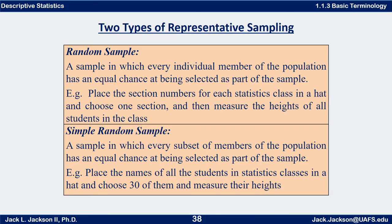The last topic in this video is sampling. It's very cost and time prohibitive to do a census, so we almost always measure a sample and then infer something about the entire population. For that inference to be accurate, the sample must be representative of the population. For example, if we want to know the average height of UAFS students, we could sample a group and use that to estimate the average height of all students. But if you're not careful about how you sample, you can get erroneous results.